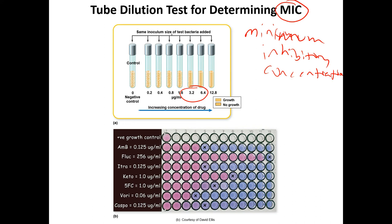You can use a test tube or a well plate — the same idea. You have broth culture, add a certain concentration of bacteria, then add a certain concentration of drug and dilute it out. Here you have a positive growth control that's pink — everything pink is showing growth. For amphotericin B, at a certain dilution you see no growth. For fluconazole, it takes a much higher dilution. This gives you an idea of the minimum inhibitory concentration of each drug against a particular pathogen.